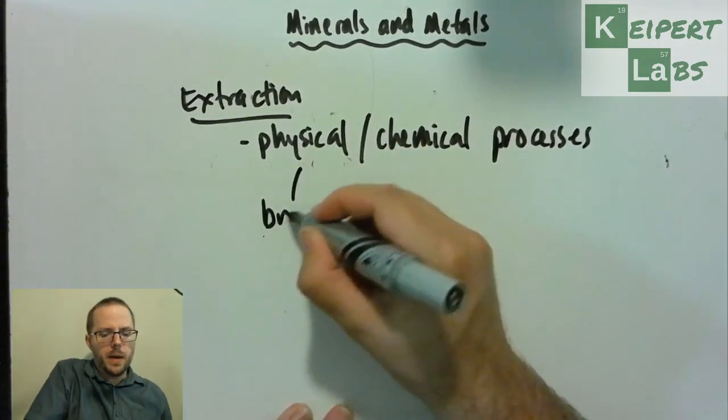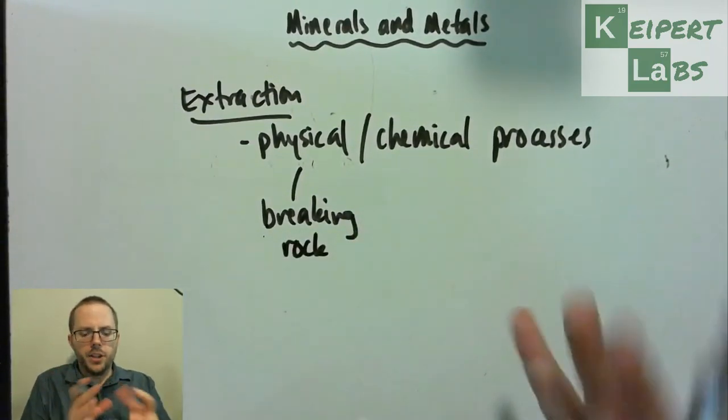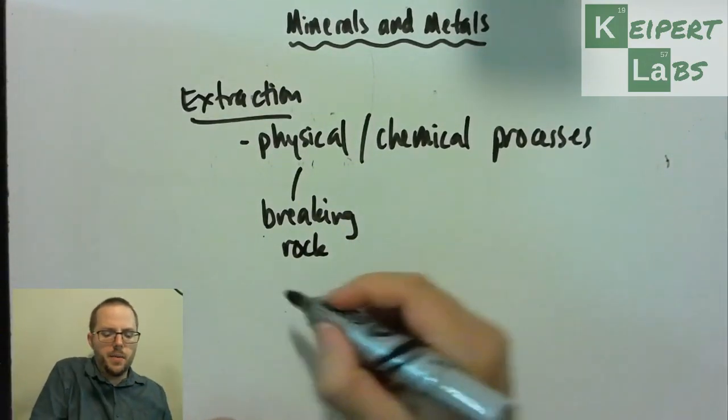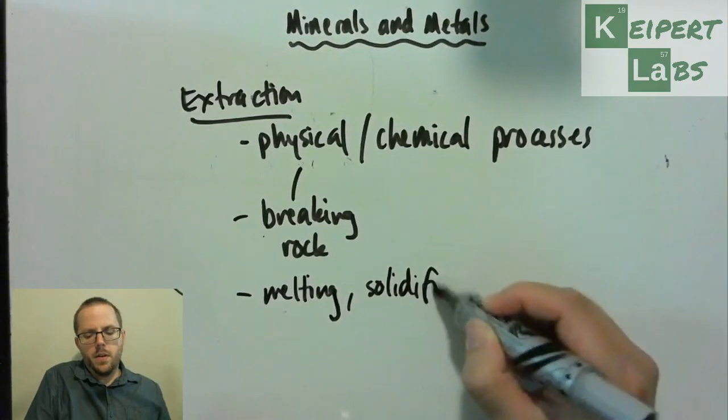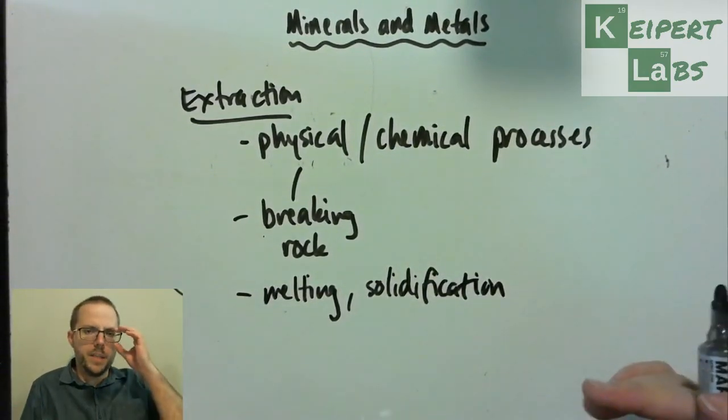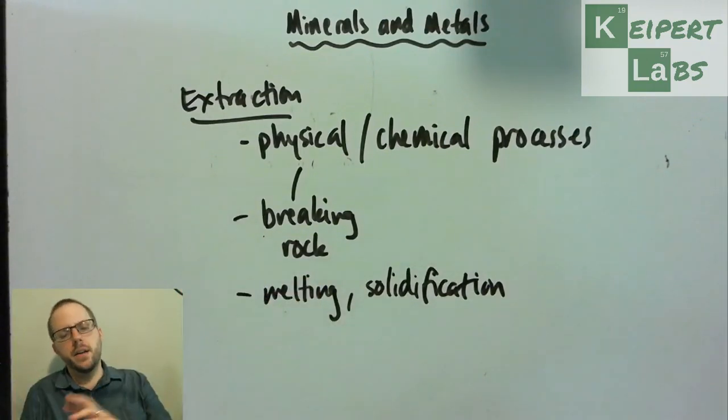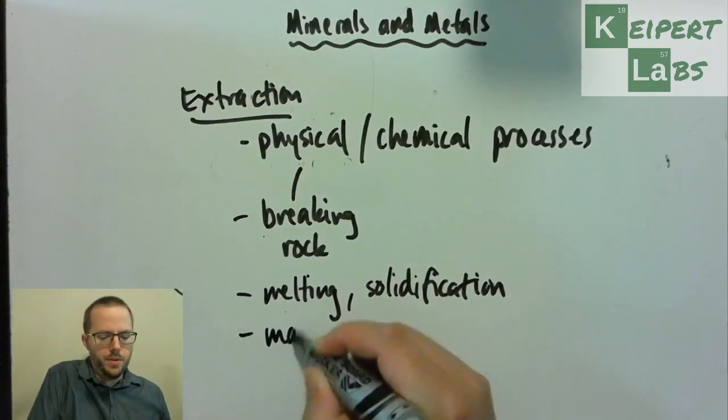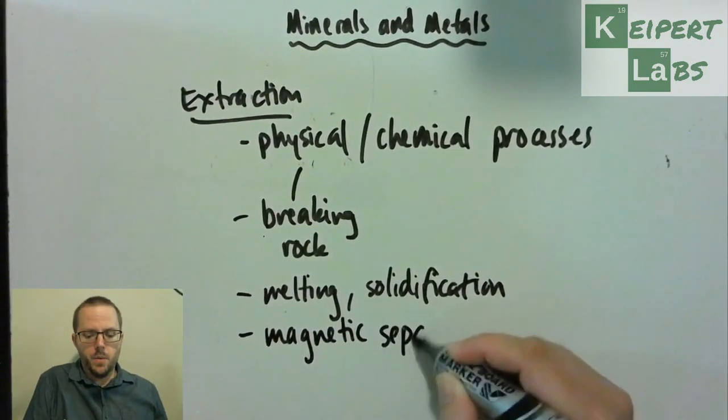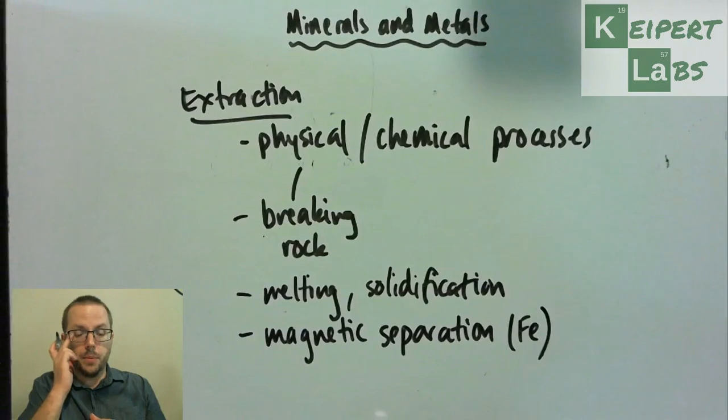So physical sort of processes, like we're talking about physically actually breaking the rock. And actually taking things and breaking it down. We might be talking about melting and then solidification, which is kind of a more fancy term for freezing, but we're typically talking about high temperatures. So freezing kind of gives us the wrong idea. Let's say this idea of melting things down and then hardening and cooling them so that they turn solid again. We might also use magnetic separation when we're thinking about things like iron or the metals that are magnetic, if we're able to actually physically separate them out, we can use magnets to actually try and extract things.